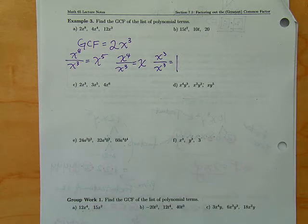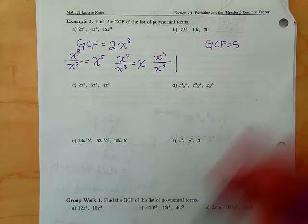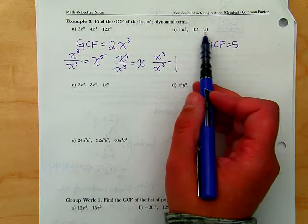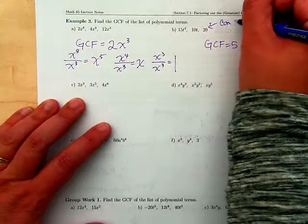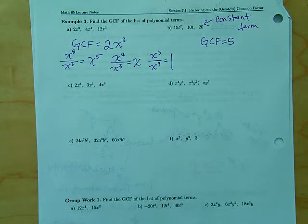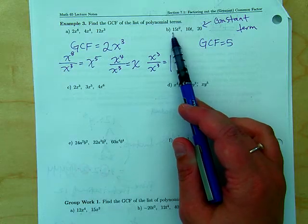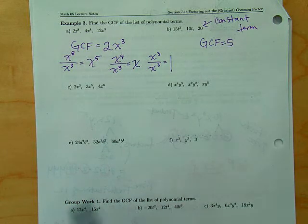For example 3b, is there a number that goes into all of those evenly? Five — so GCF equals 5. What about any variables? We can't include a variable because 20 is a constant term. A constant term is a number with no variable — it doesn't change. The 15 term would change if we plugged something in for t, but 20 has no variable attached to it, which is why it's called a constant term.